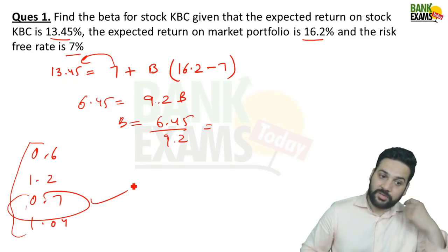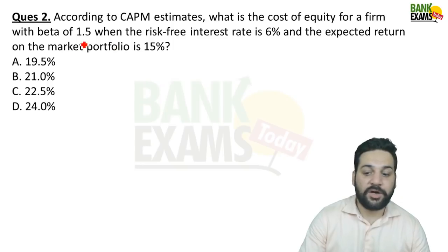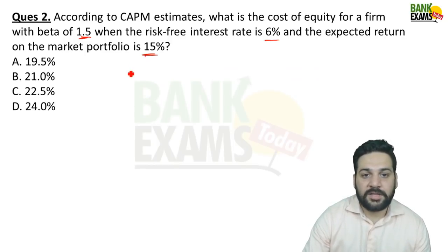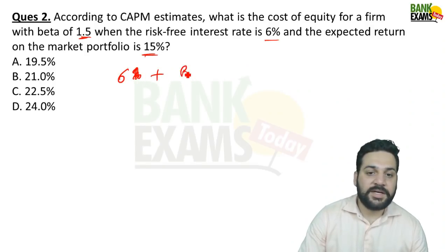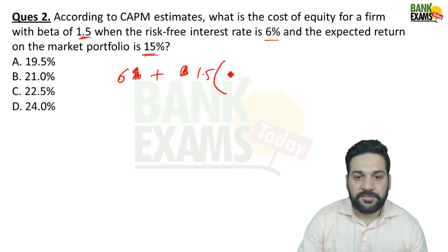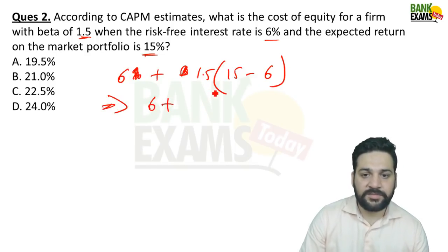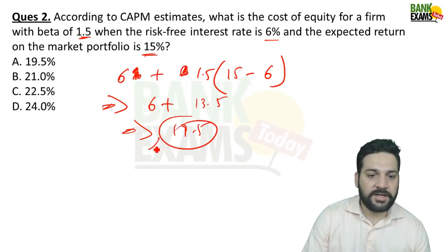Question 2: According to CAPM, what is the cost of equity for a firm with beta 1.5, risk-free return 6%, and expected market return 15%? Using the formula: 6 + 1.5 × (15 − 6) = 6 + 1.5 × 9 = 6 + 13.5 = 19.5%. The answer is 19.5%.